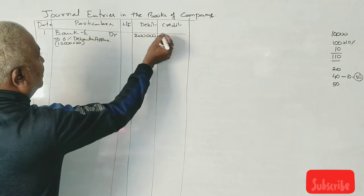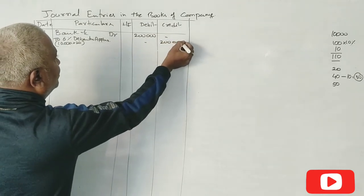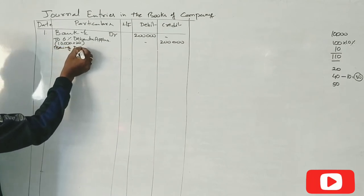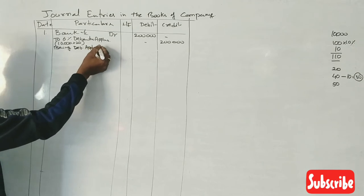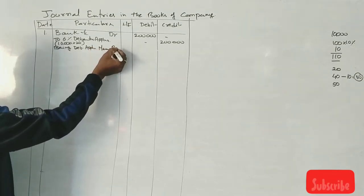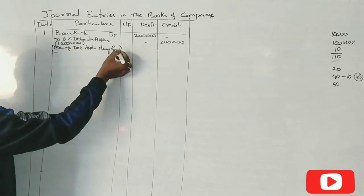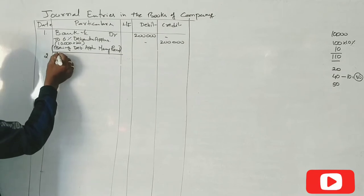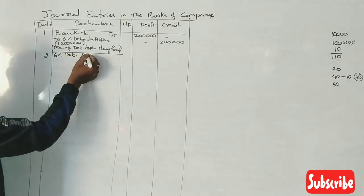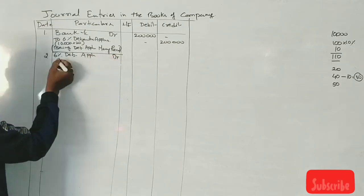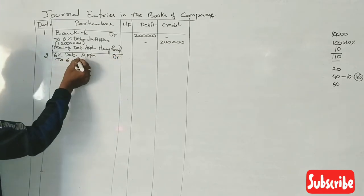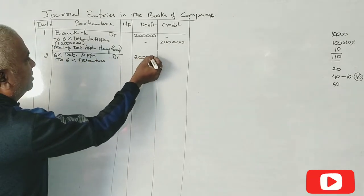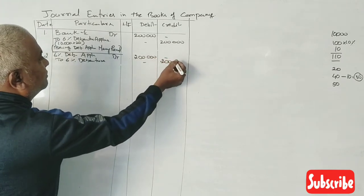Second journal entry: 6% Debenture Application Account debit to 6% Debentures Account. Same amount — ₹2 lakhs to ₹2 lakhs. Narration: Being debenture application money transferred to debentures account.